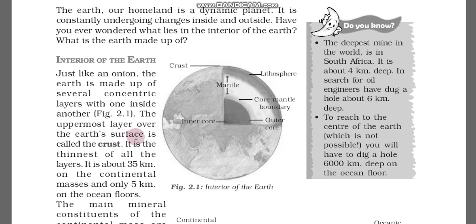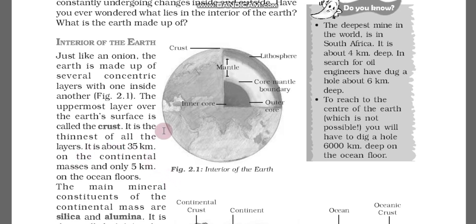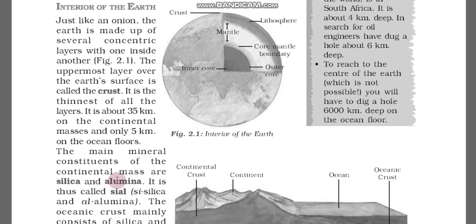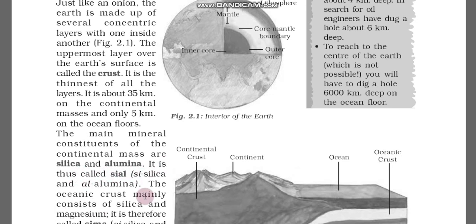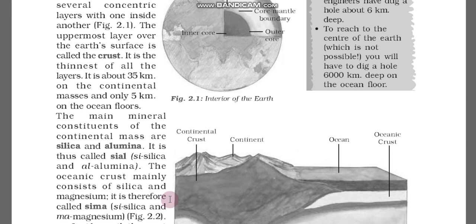The uppermost layer over the earth's surface is called the crust. It is the thinnest of all the layers — about 35 km on the continental mass and only 5 km under the oceans. The main mineral constituents of the continental mass are silica and aluminium, so it is called sial. The oceanic crust mainly consists of silica and magnesium and is therefore called sema.